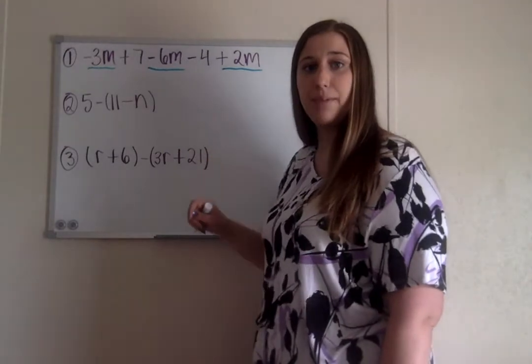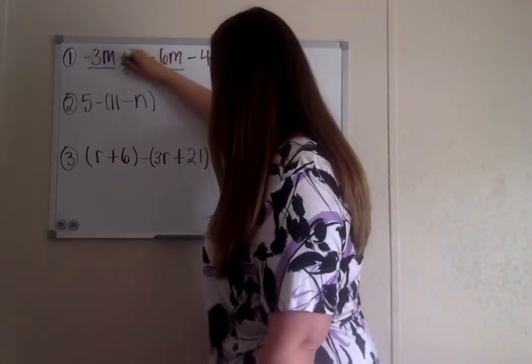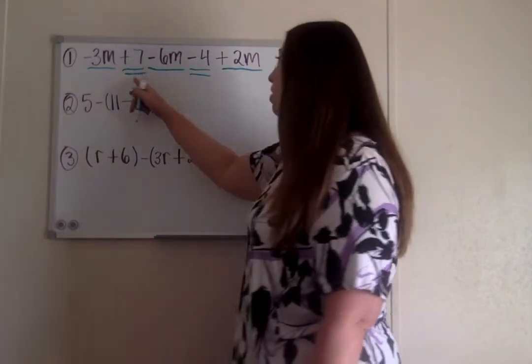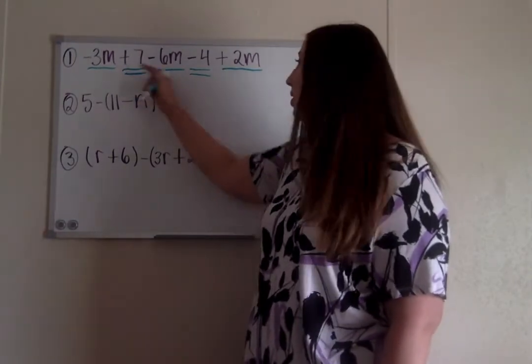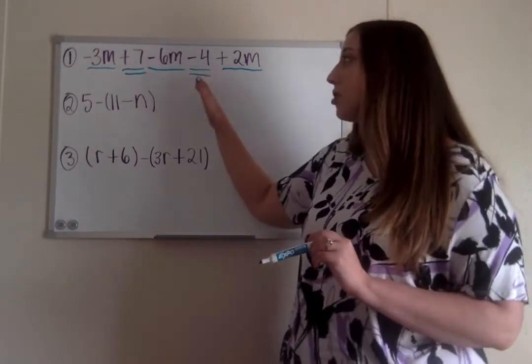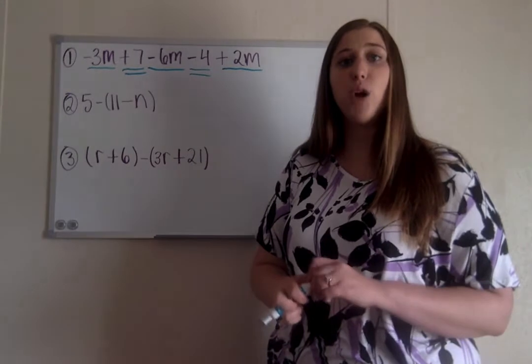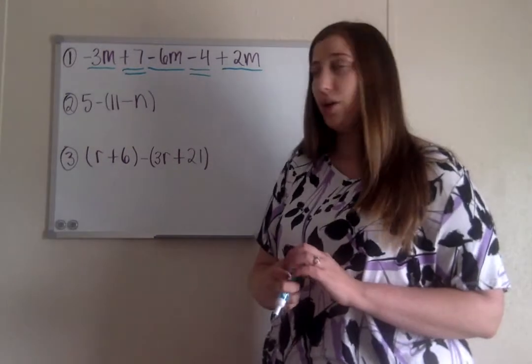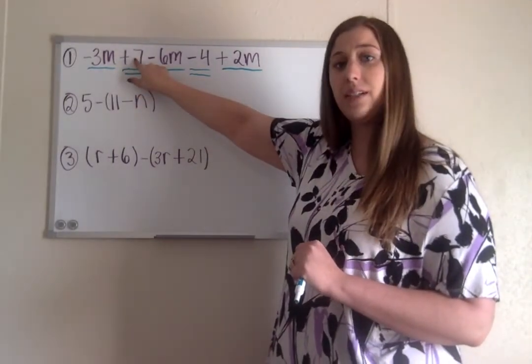Right, that means that positive 7 and that negative 4 are also like terms because they don't have a variable. We know what 7 minus 4 is. So besides identifying the like terms, the other key part here is that you always keep the sign in front of the number.